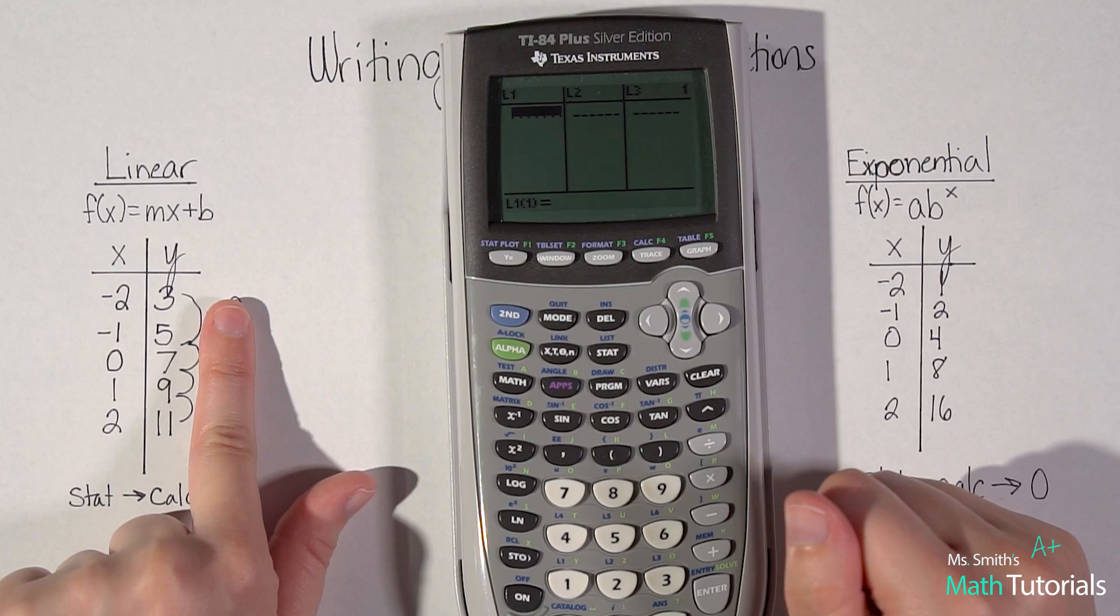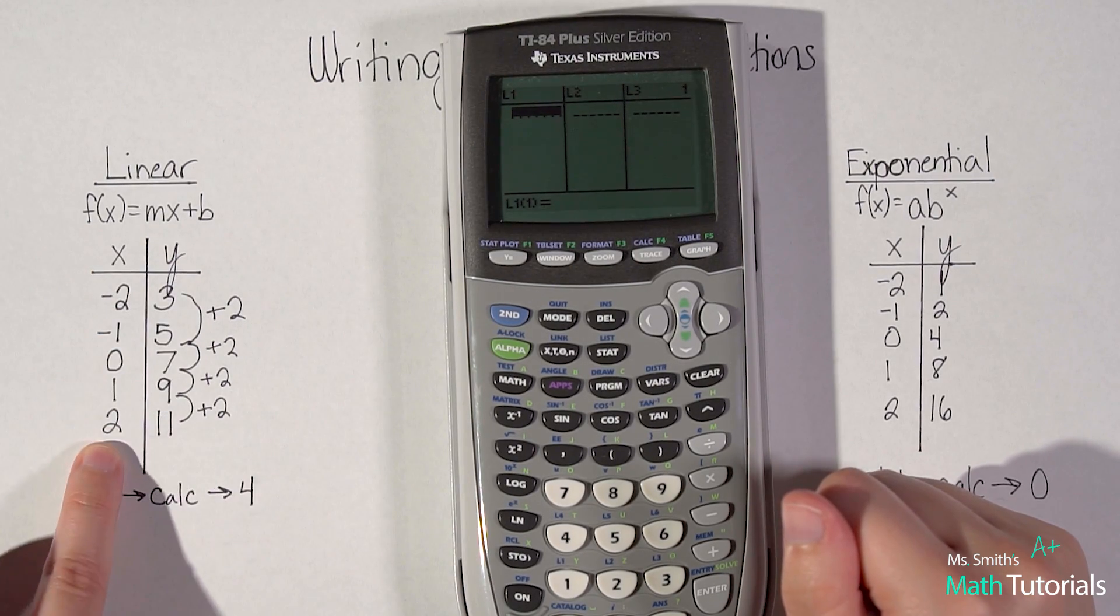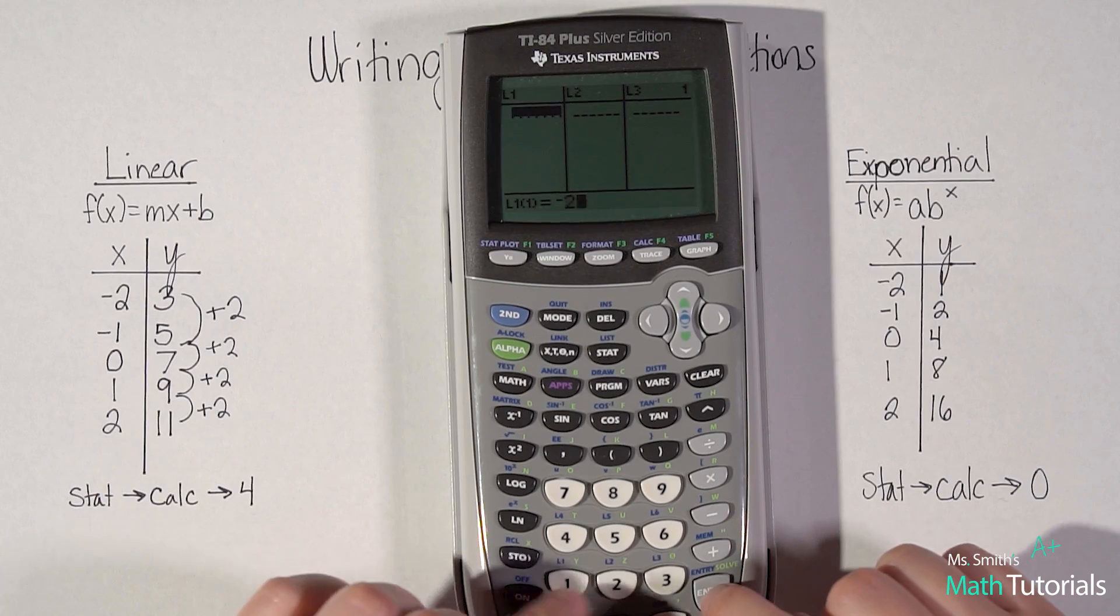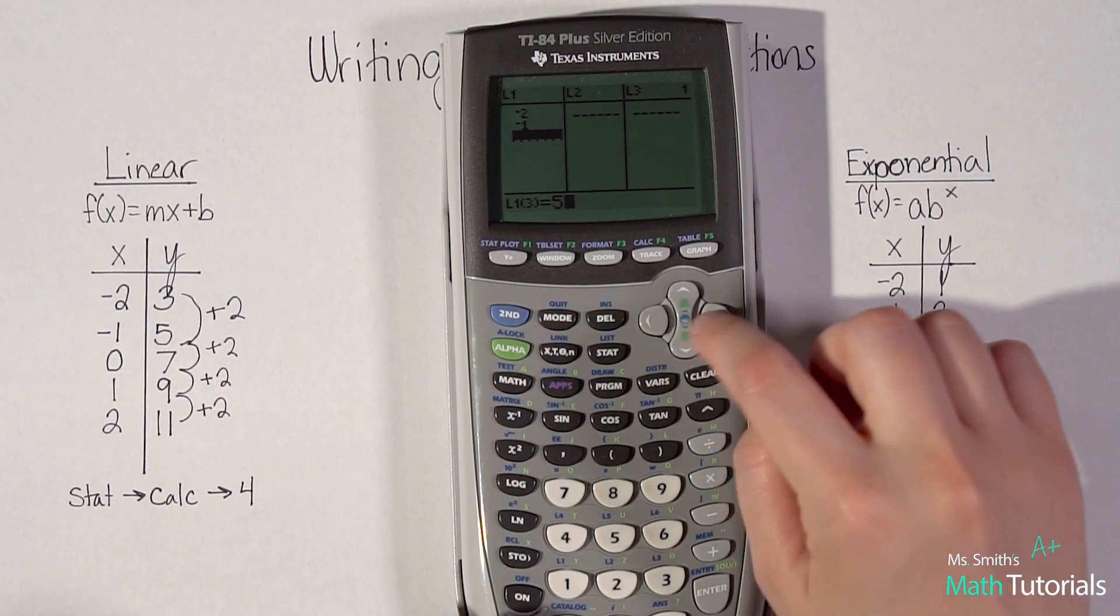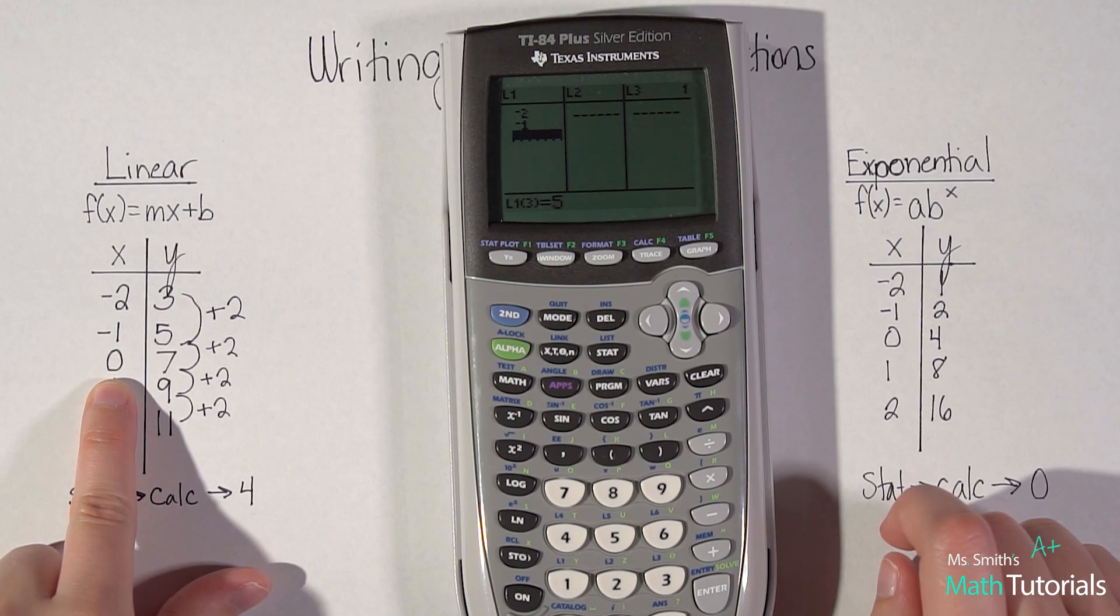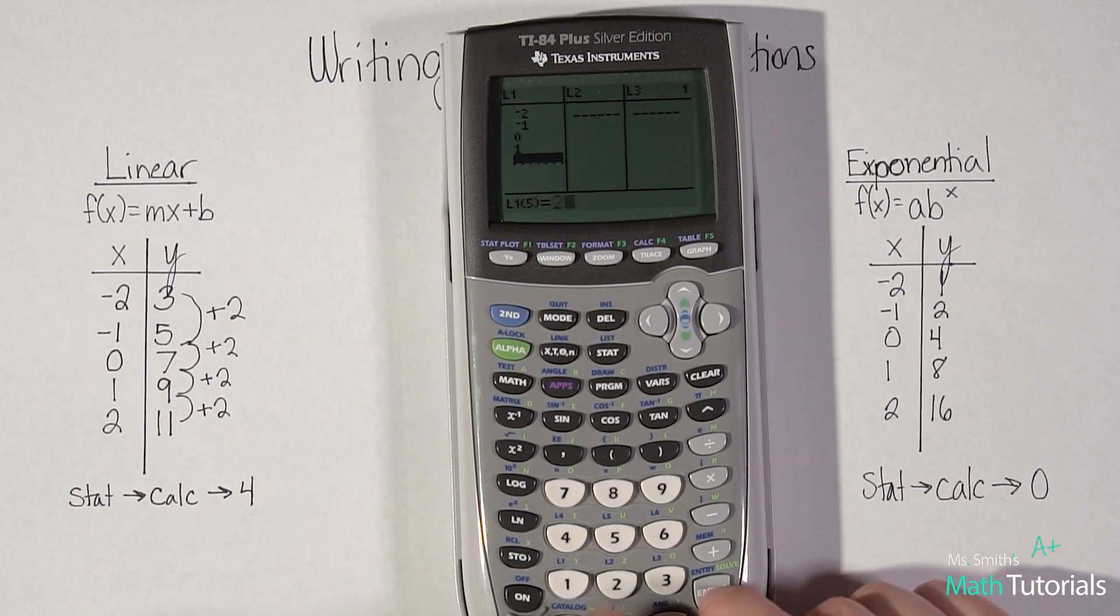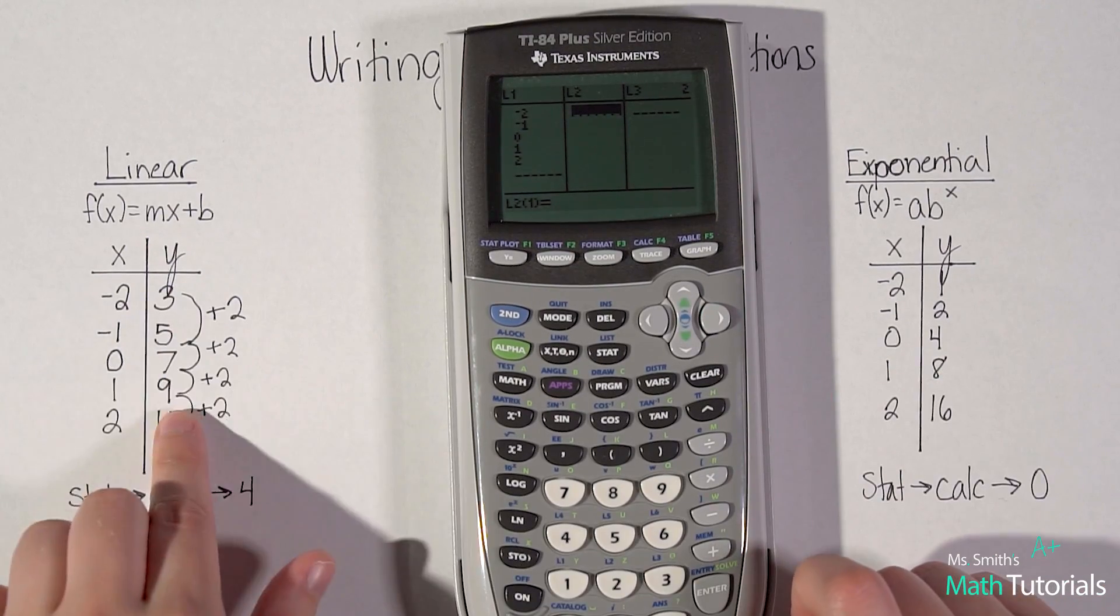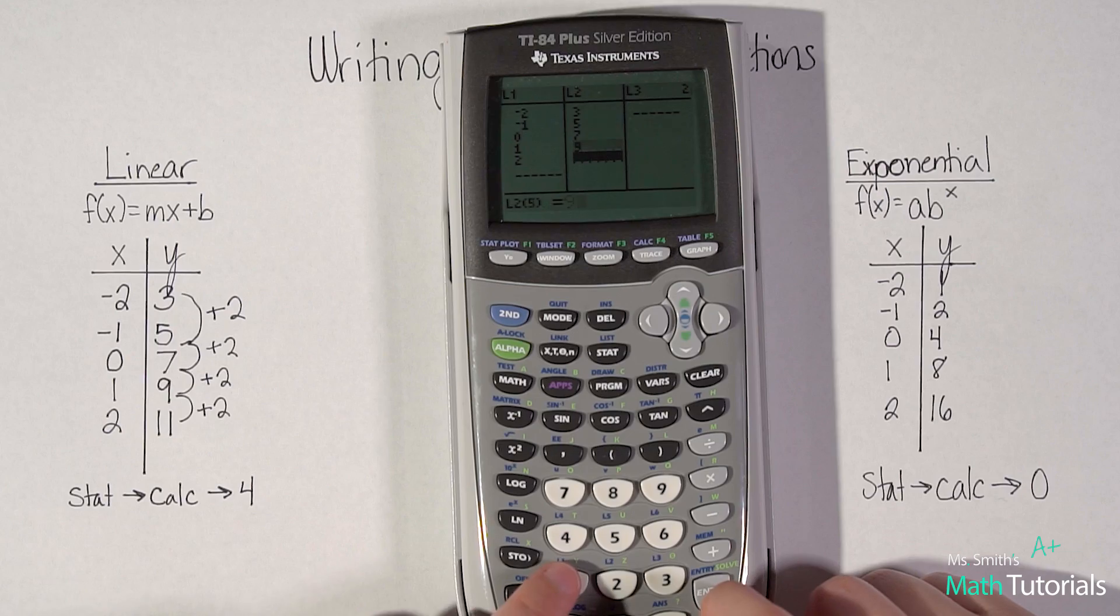We want to go to edit, and we want to insert our two lists. I'm not doing the pattern, I'm just doing my x and y values. I'll do all my x's in list one. Negative two, negative one, zero, one, and two. Let me come over here and do my y values. Three, five, seven, nine, 11.